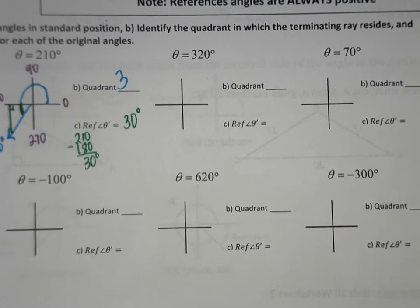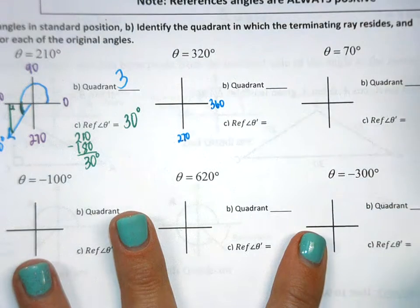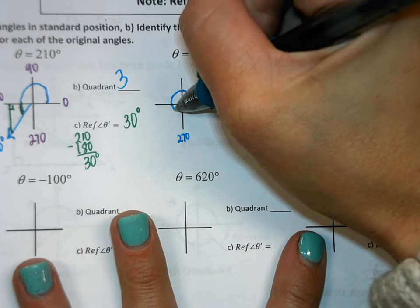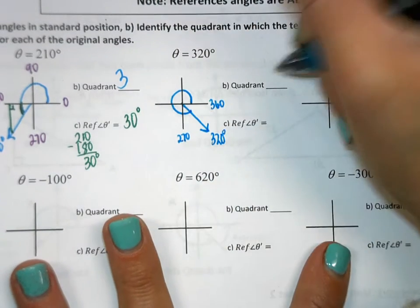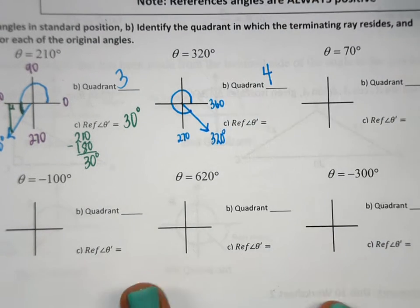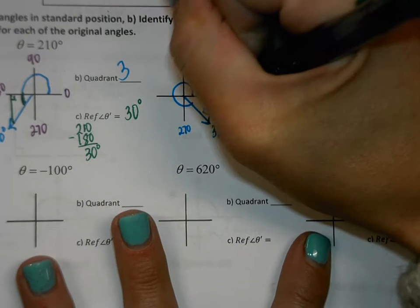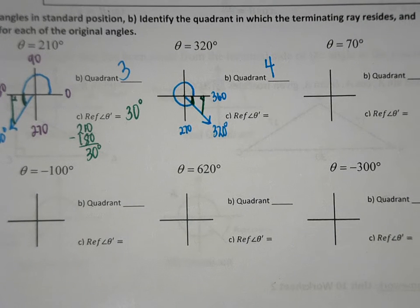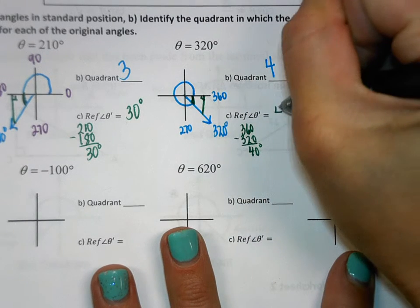For 320 — this is between 270 and 360 when it loops back around, so 320 is in quadrant 4. You start at 0, it wraps around, and stops in quadrant 4. The reference angle goes up to the x-axis, and it's always less than 90 degrees. To find it, we take 360 minus 320, which is 40 degrees.